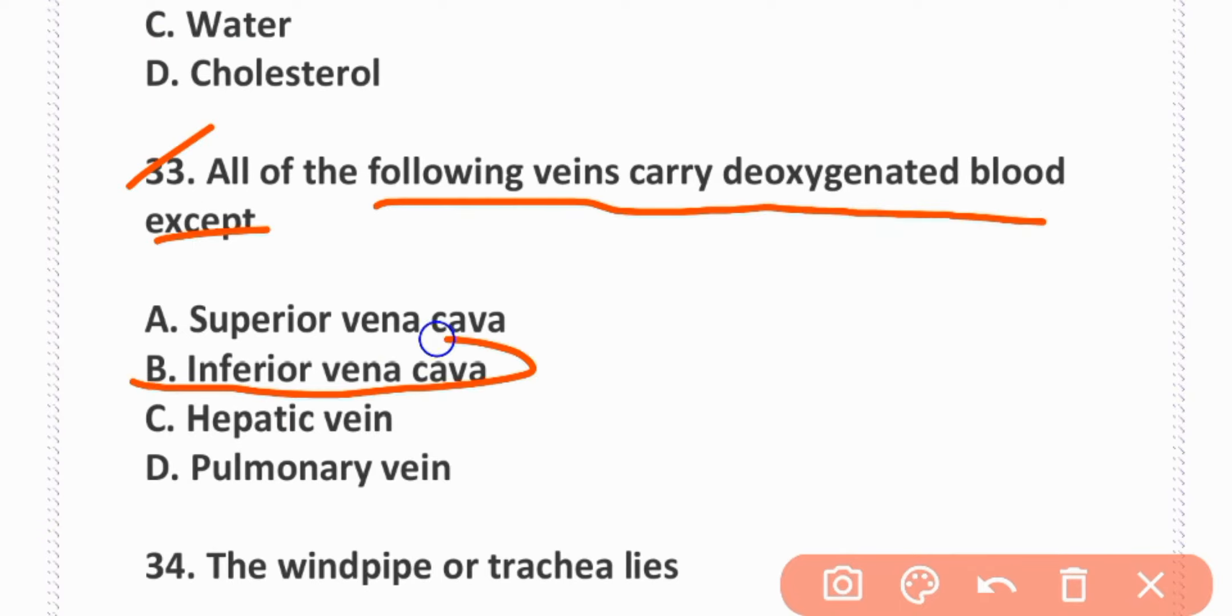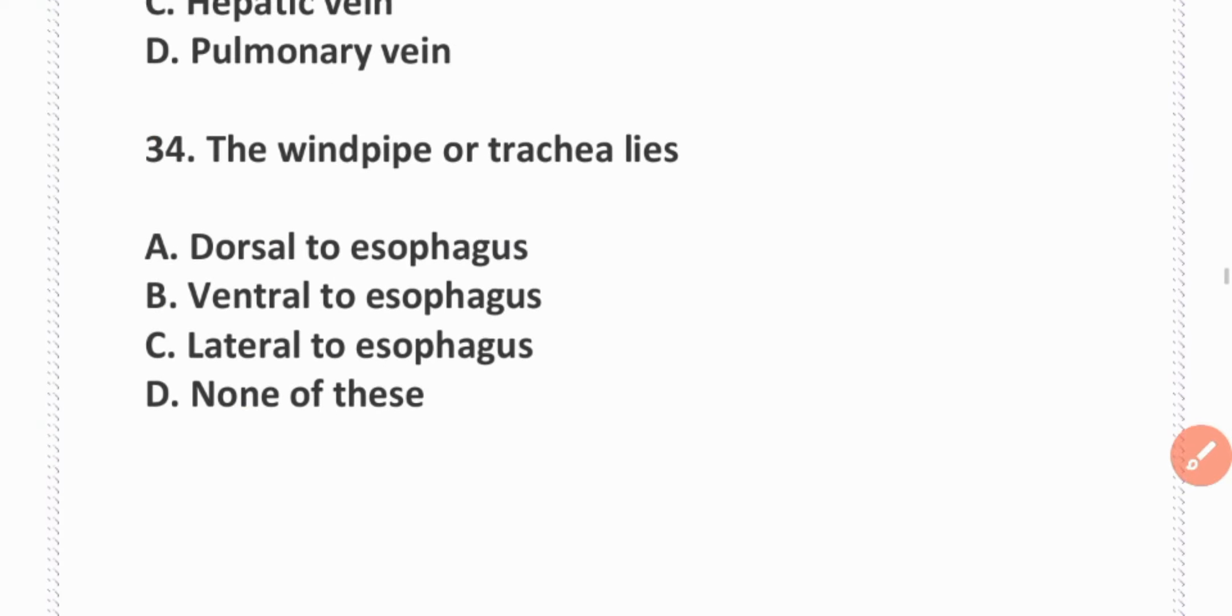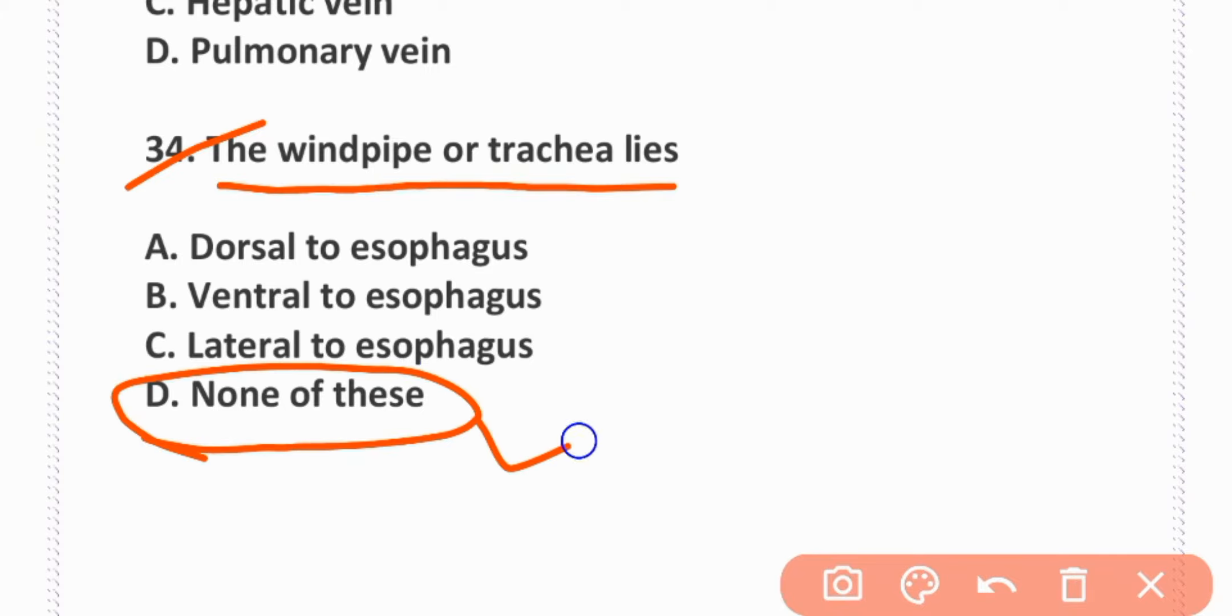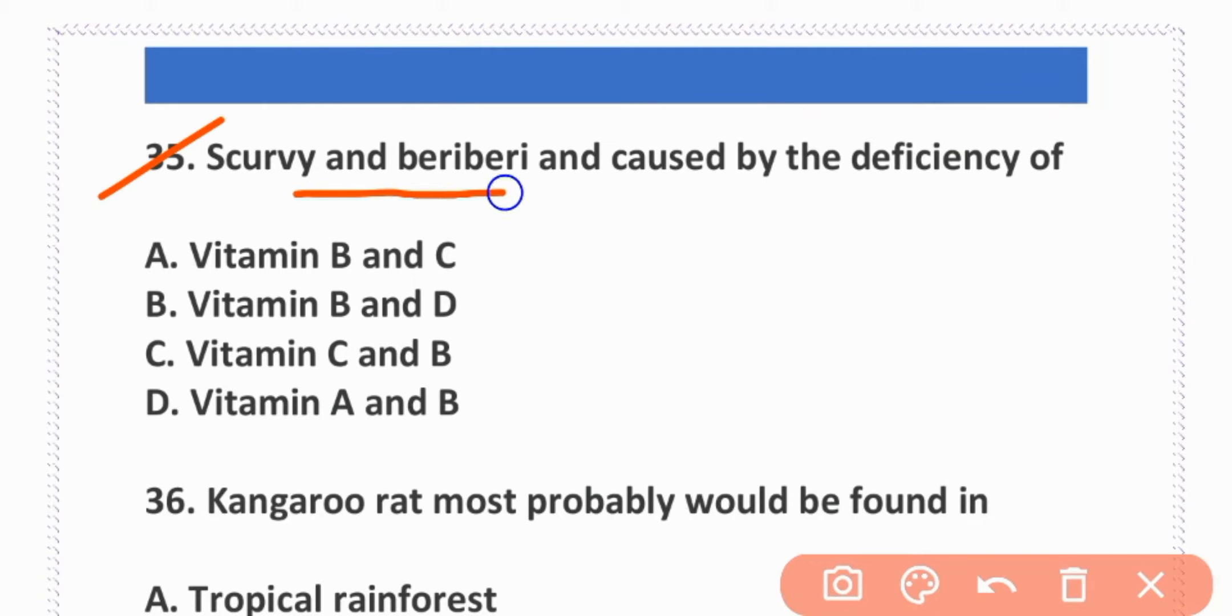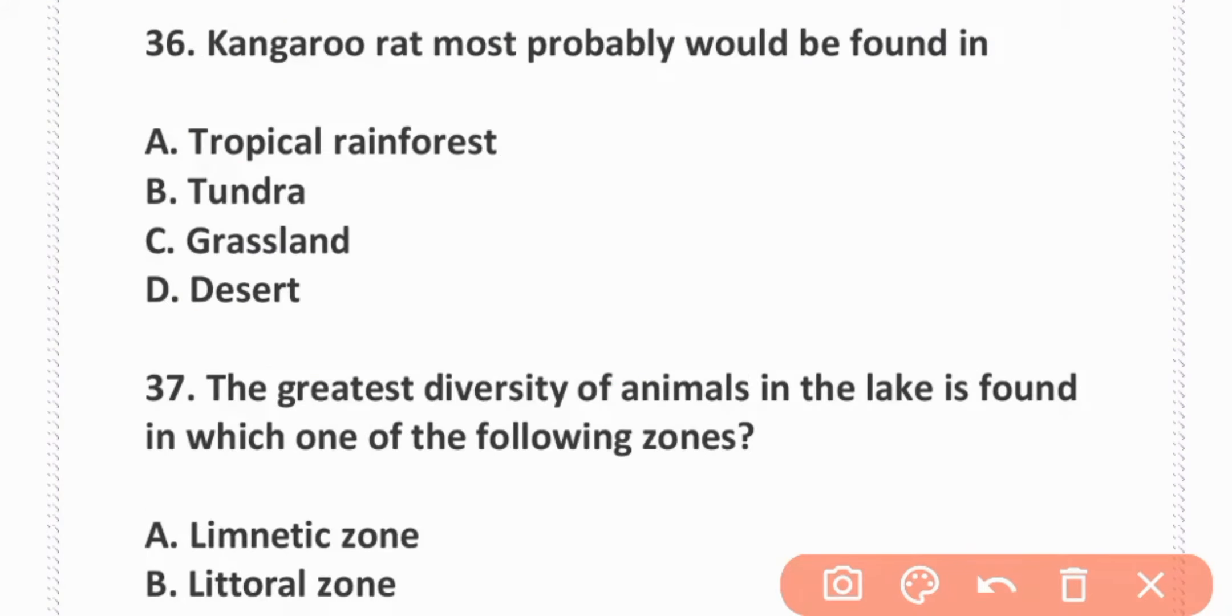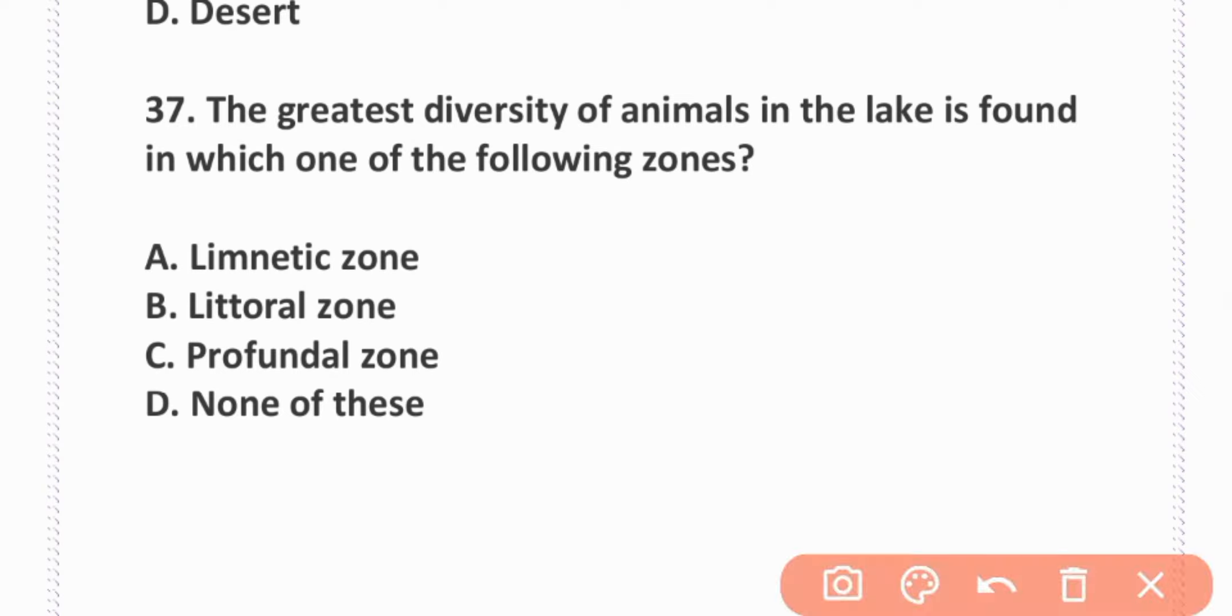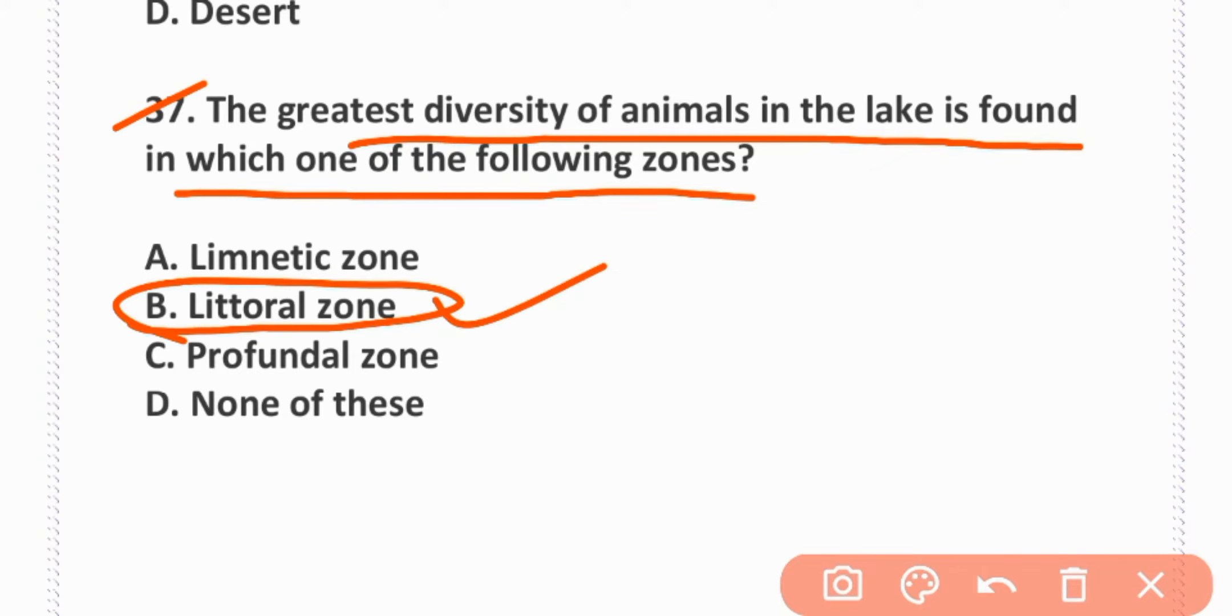All of the following veins carry deoxygenated blood except pulmonary vein. Option B is correct. Scurvy and beriberi are caused by deficiency of vitamin C and B. Option C. Kangaroo rat most probably would be found in desert. Option D is correct. The greatest diversity of animals in lake is found in littoral zone. Option B is correct.